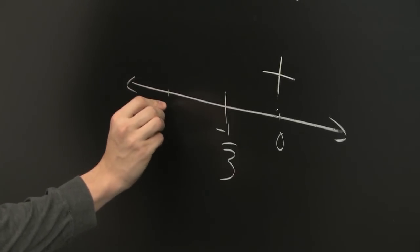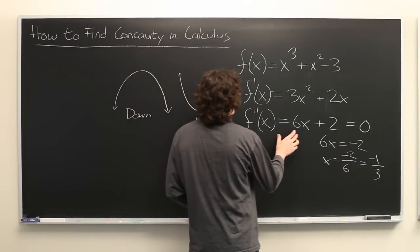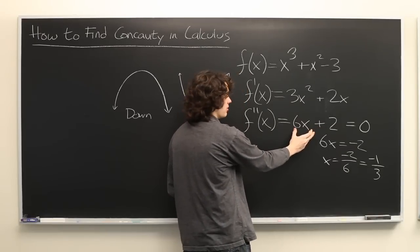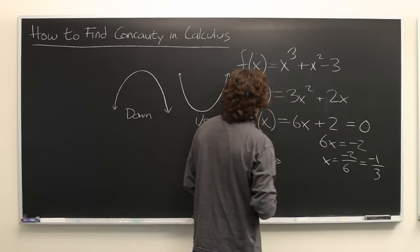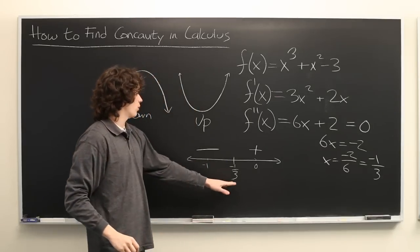Let's try throwing in negative 1. f double prime of negative 1, we get negative 1 times 6 is negative 6 plus 2 is negative 4. So everything to the left of negative 1 third is negative.